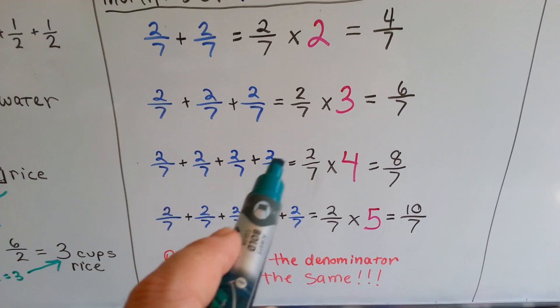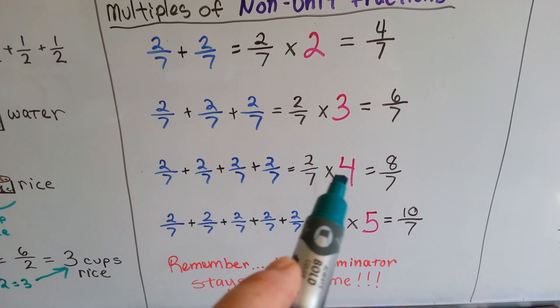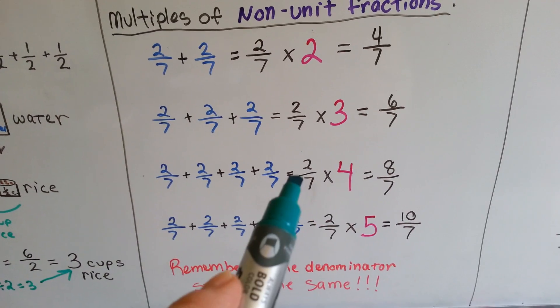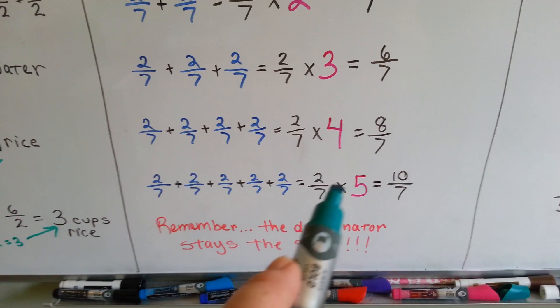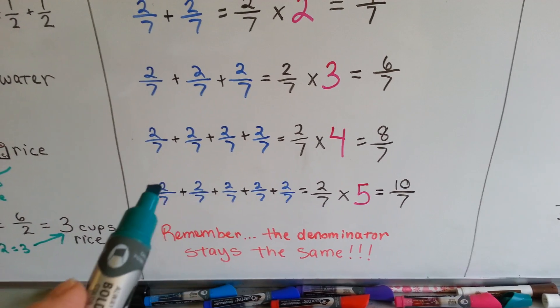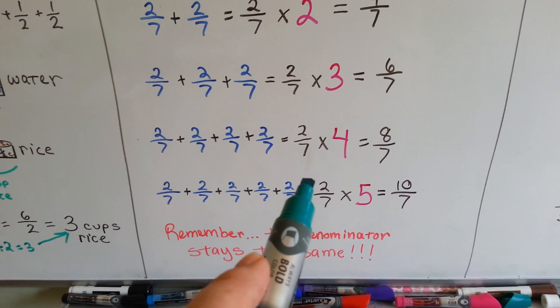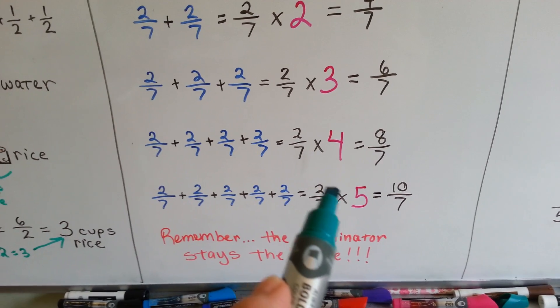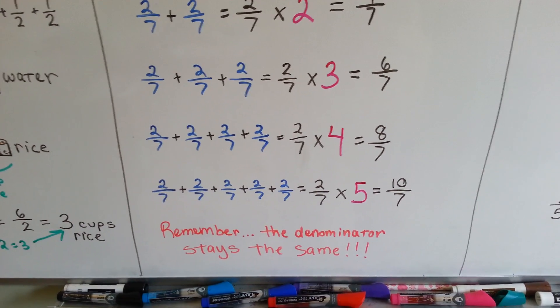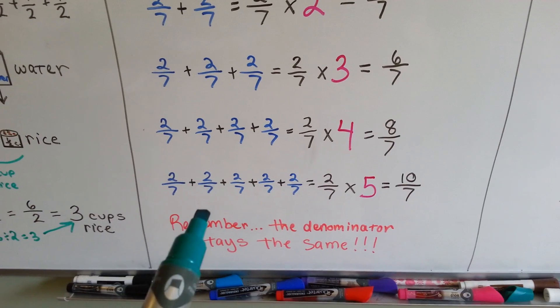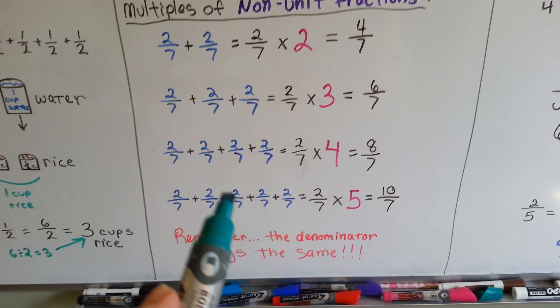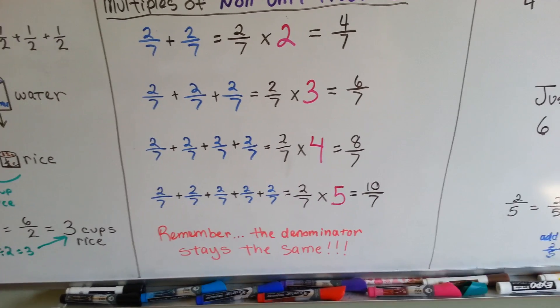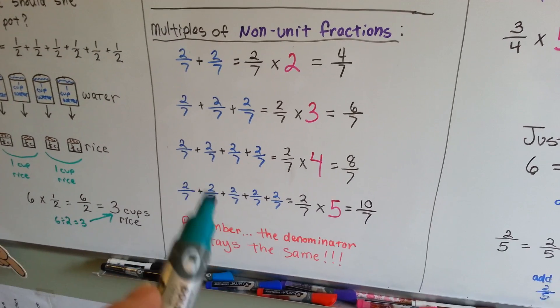4 of them would be 2 sevenths times 4. 4 times 2 is 8, so 8 sevenths. If we had 5 of them, it would be 2 sevenths times 5. Add up the 2's, 5 times, it makes a 10. Or we could say 2 times this 5 is 10 and keep the denominator. So remember, the denominator stays the same. And I explained very thoroughly in the last video why it stays the same, if you're confused about multiples of fractions not going up with the denominator.